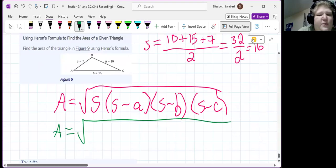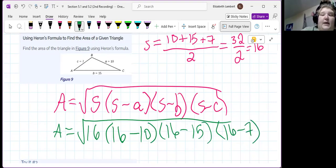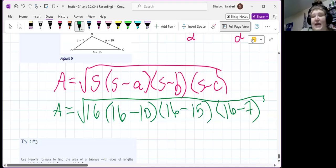So, big square root, 16, 16 minus A is 10, times 16 minus B is 15, times 16 minus C is 7. And that, as is there, we could type that in.